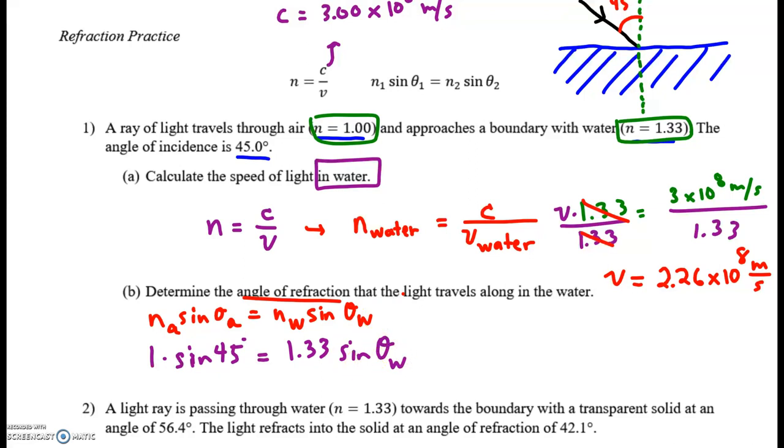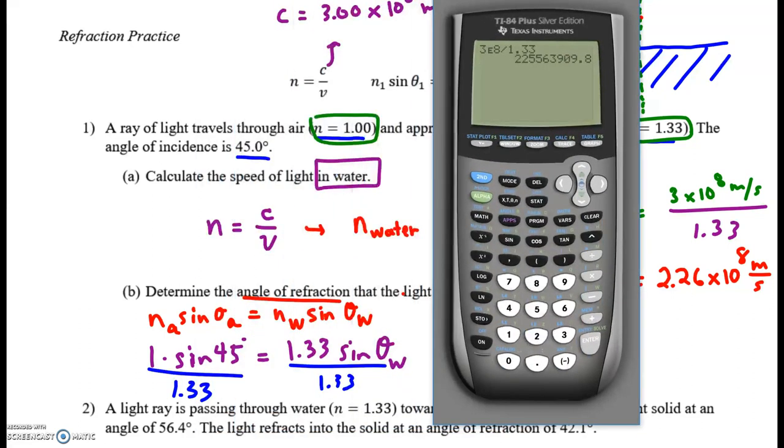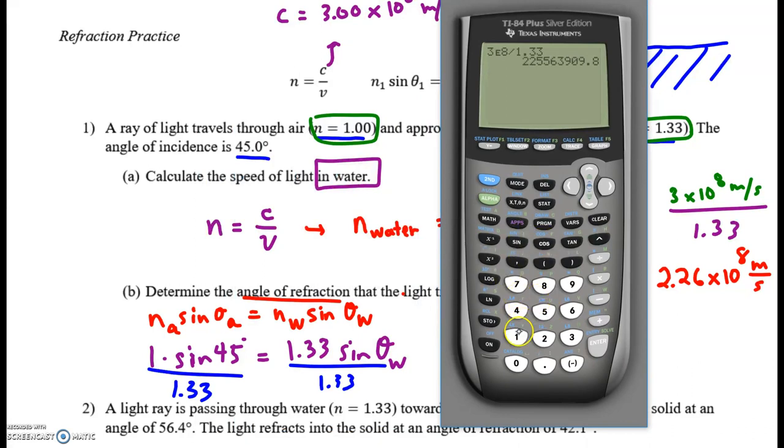So I need to isolate theta. I'll divide both sides by 1.33. That's my first step. Let me get my trusty calculator. Mr. Buttons. So I have 1 times sine. Well, 1 times anything is just the thing. So let me check my mode.